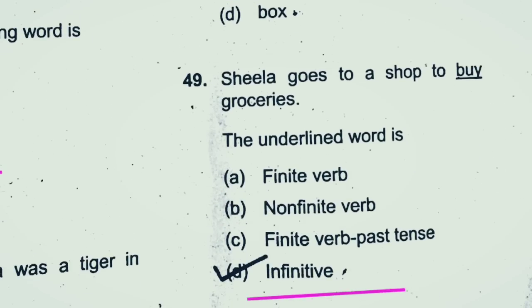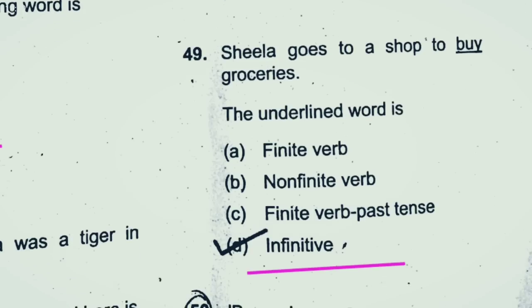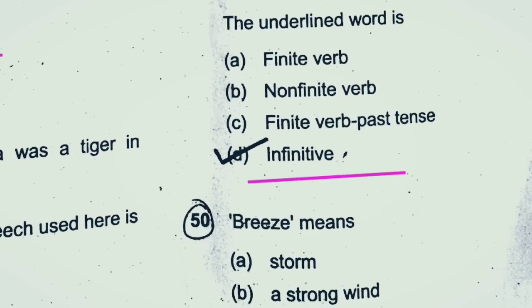Question 49: Sheila goes to a shop to buy groceries. To buy, to have, to learn — these are infinitives. This is the right answer. 49th — infinitive. Very easy question.